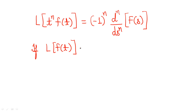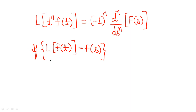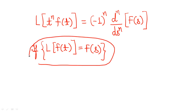Now, what is F(s) here? If you find the Laplace transform of f(t), that f(t) will be a kind of function for which you already know the Laplace transform, because there are a few basic and general formulae for some functions which we all need to memorize. So F(s) is the Laplace transform of f(t) which you already know. Let's take some examples to make it more clear.